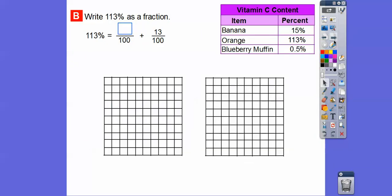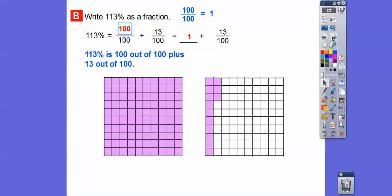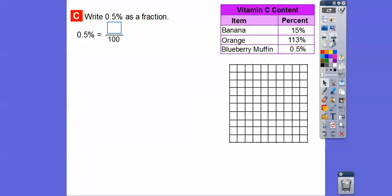All right, so 113%. So 113% is 100 out of 100 plus 13 out of 100 right there. So here's the 100% or 100 out of 100 plus the 13 out of 100. Now 100 out of 100, do you know what 100 out of 100 reduces to? It reduces to 1 right there. So this is 1 plus 13 hundredths. Let's write that as a mixed number. So 113% is going to be 1 and 13 hundredths. Here's the 100% plus 13 hundredths. So 1 and 13 hundredths right there.